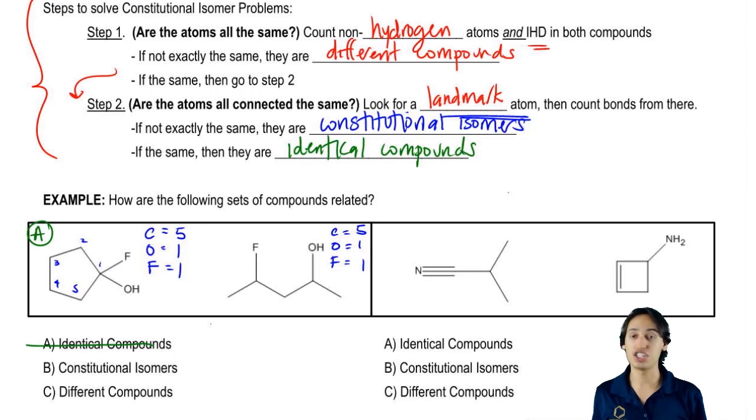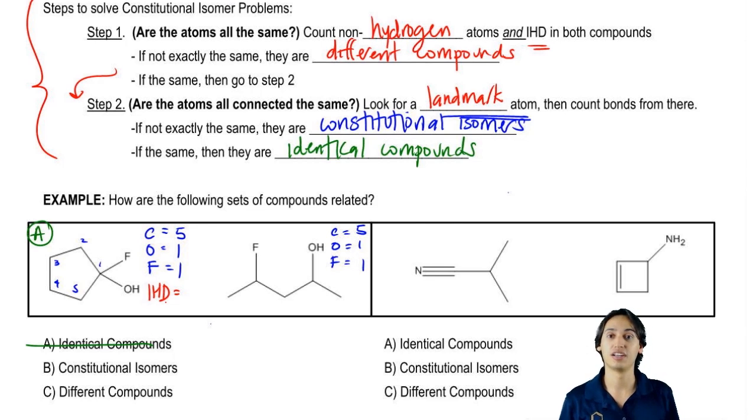But let's also count IHD. Remember, when you have a structure, how do you count IHD? Double bonds and rings equal one, and triple bonds equal two. So in this case, what's my IHD? It's one.